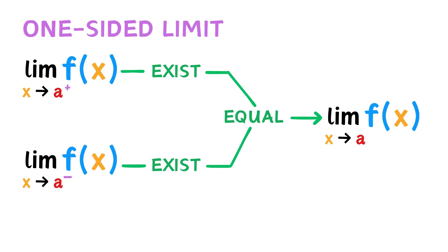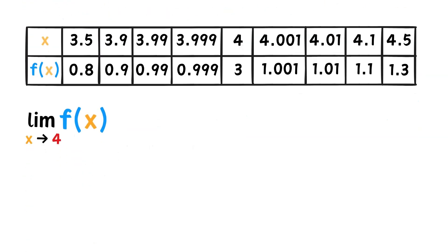So far, all the limits we've evaluated were on graphs. So let's try finding some limits using tables. Using the data from this table, can we find the limit of f of x as x approaches 4? Well, let's first sketch the points.